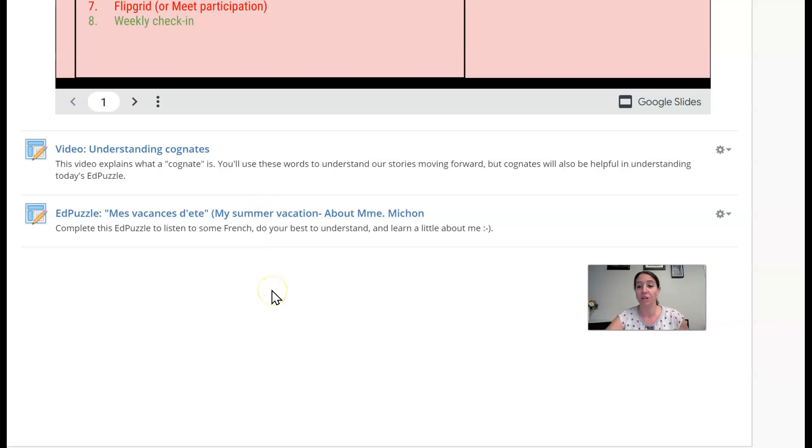So what you're going to do is you're going to watch me going through a slideshow and everything I say, with a few exceptions maybe, is going to be in French. So you're going to use your understanding of cognates. You're also going to use the pictures that are in the slideshow, and you're going to answer some questions as the video progresses about what is in the slideshow.